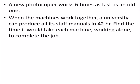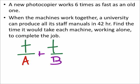Alright, we're going to look at this one in a couple different ways. The first way is using that equation where we take the time it takes both of them to perform the job, divide by the time it takes machine A, then add that to the total time divided by machine B, and that should equal 1.